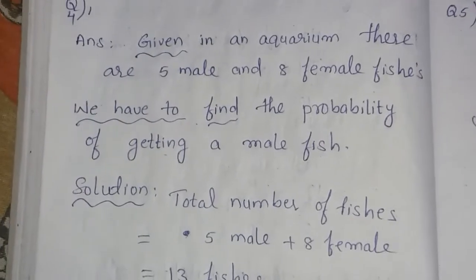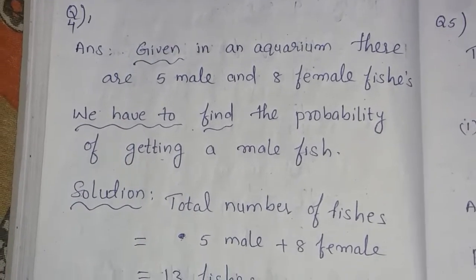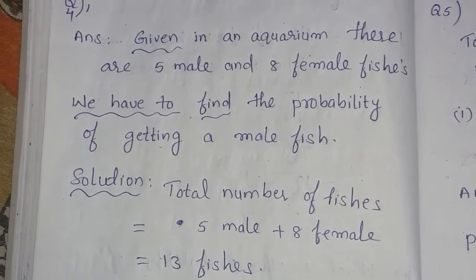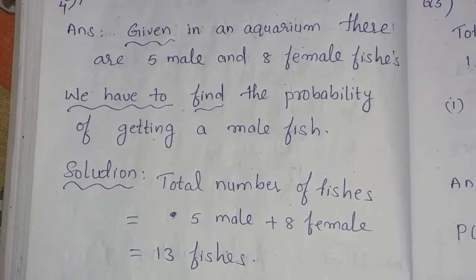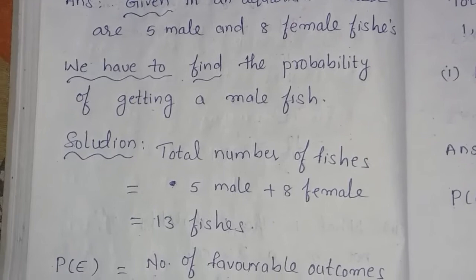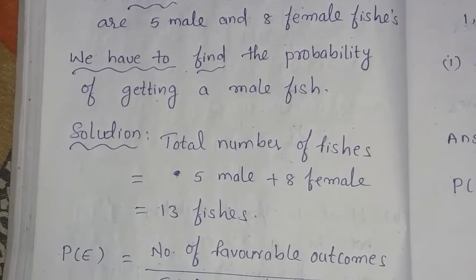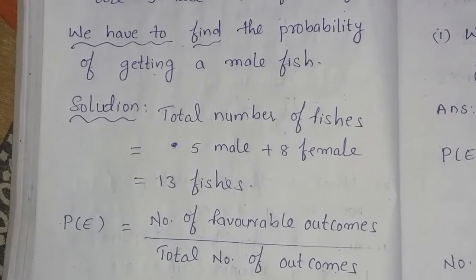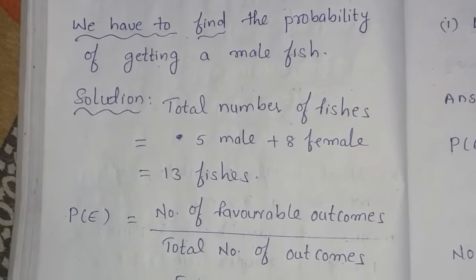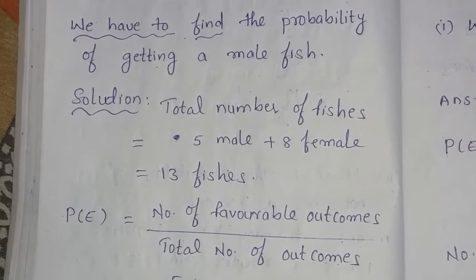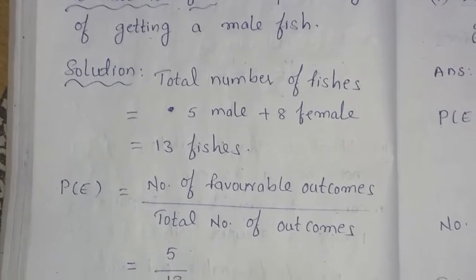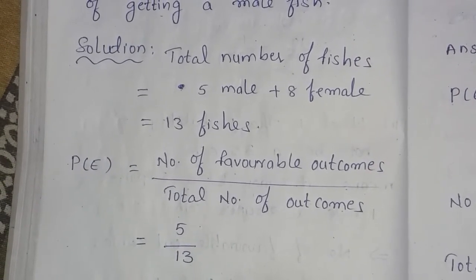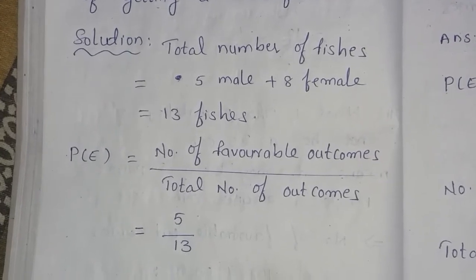In the question, it is given that in an aquarium there are 5 male and 8 female fishes. We have to find the probability of getting a male fish. Solution: First step, find out the total number of fishes. Total number of fishes equals 5 male plus 8 female, which is 13 fishes. The probability formula is number of favorable outcomes by total number of outcomes.